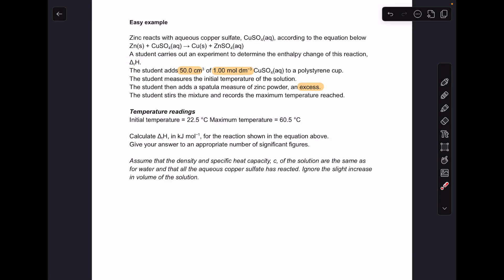OK, so we'll start with the easy example. We've got zinc reacting with copper sulfate solution. There's the equation. Nice, easy, one-to-one ratio. The students added the chemicals together in a polystyrene cup.